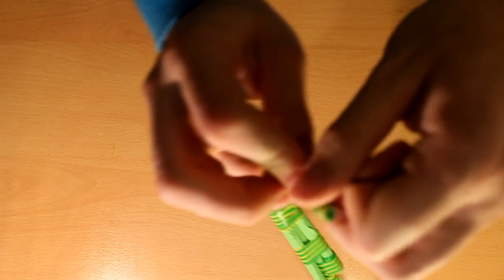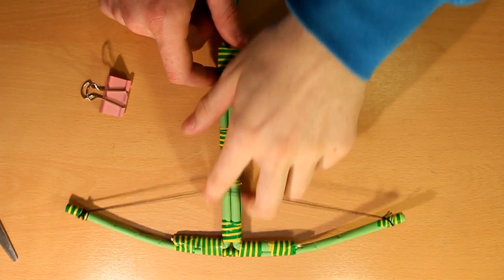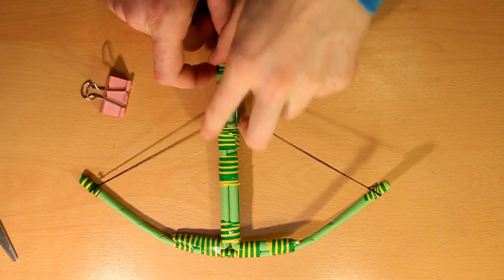Bend the bow a little bit and make another knot. Pull the string a little bit to the point where you think the tension is right.